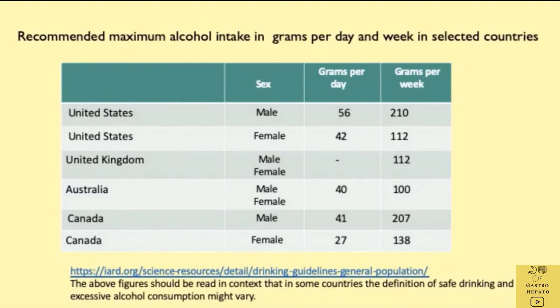As you can see from this table, the amount of alcohol considered a safe limit varies from country to country. In the United States, anything more than 210 grams for men and 112 grams for women per week is considered to be excessive consumption of alcohol.